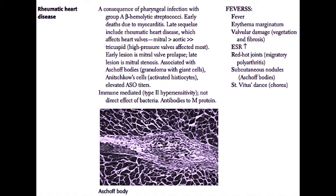This light micrograph shows an Aschoff body, which is one of the hallmarks of rheumatic heart disease. This granuloma within the myocardium contains large giant cells as well as Anitschkow cells, which are activated histiocytes.